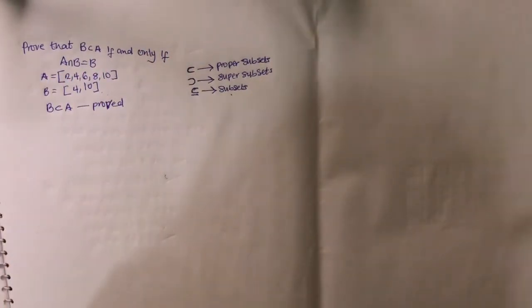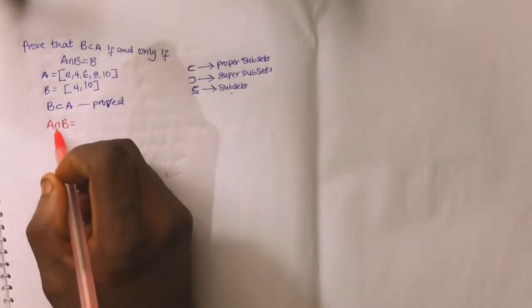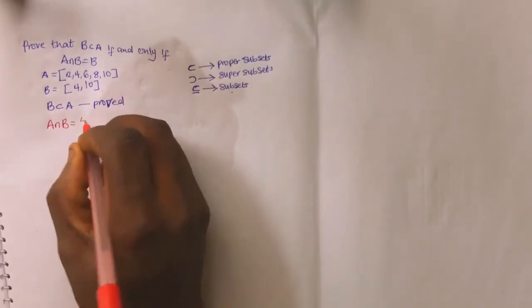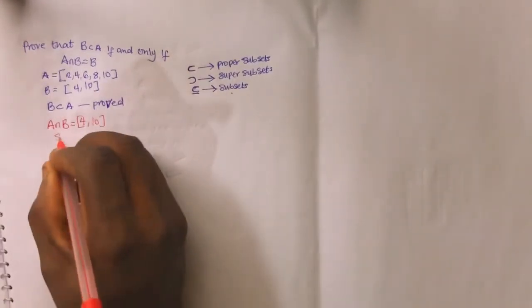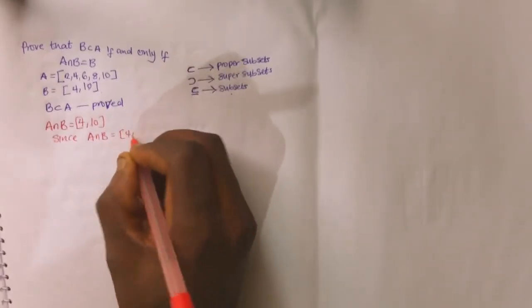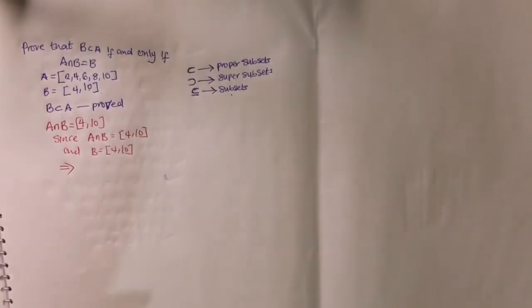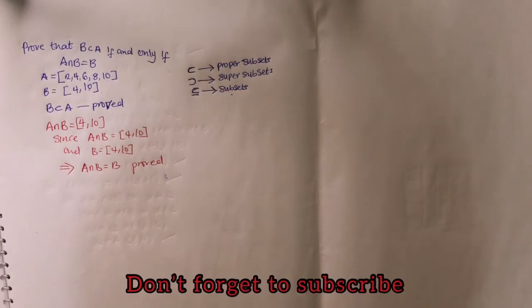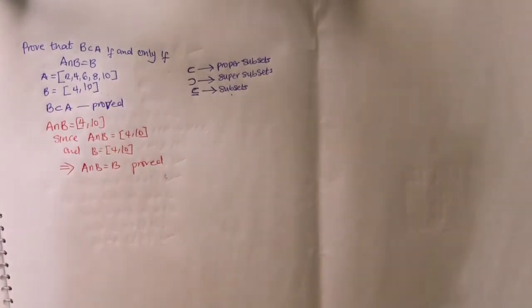A intersection B means the elements that are present in both A and B — the common elements. Looking for A intersection B: the elements present in both A and B are 4 and 10. So A intersection B equals {4, 10}. And B also equals {4, 10}. This implies that A intersection B equals B — which is proved. That's very simple, and it's logical — that's the meaning of 'if and only if.'